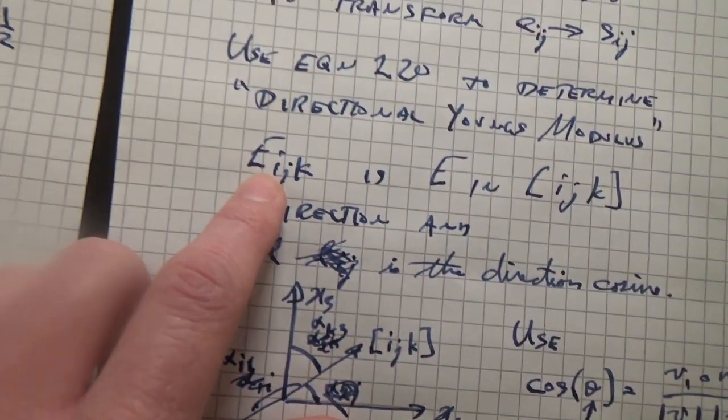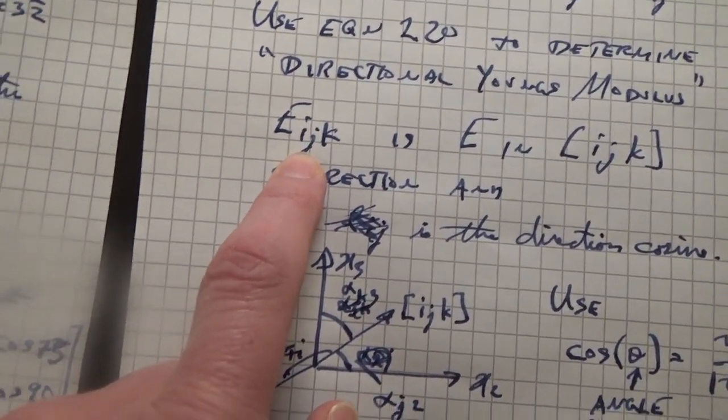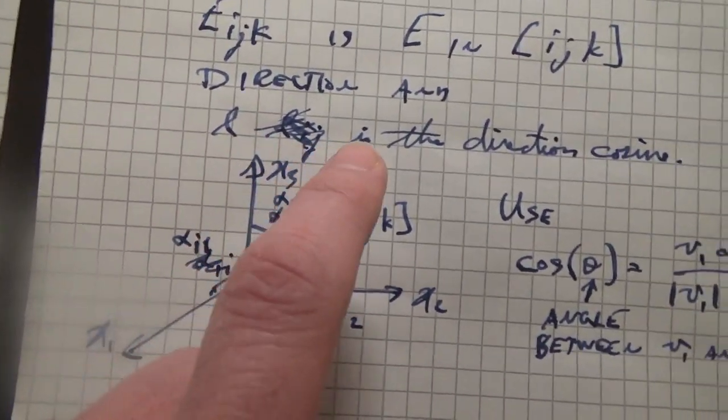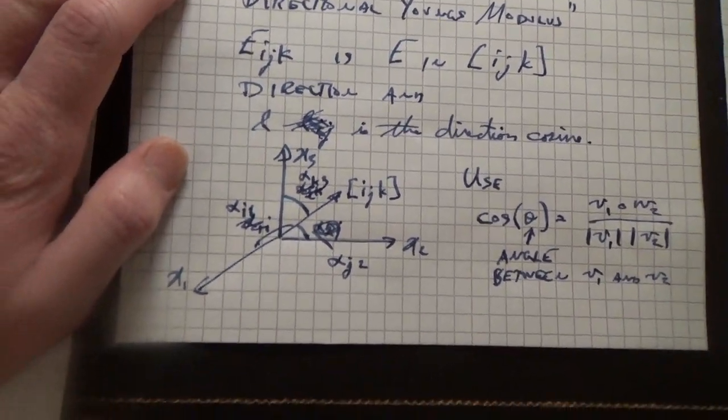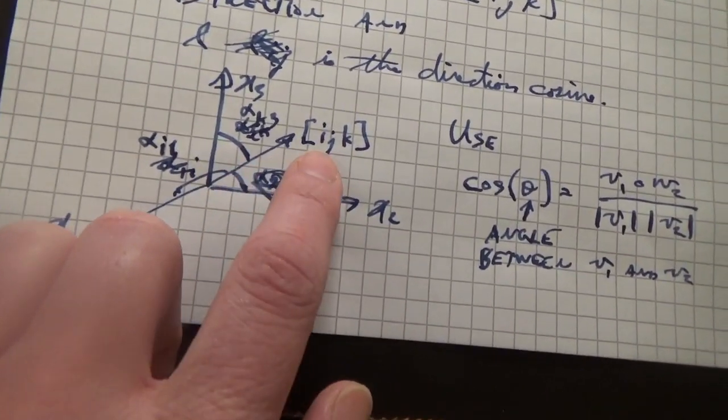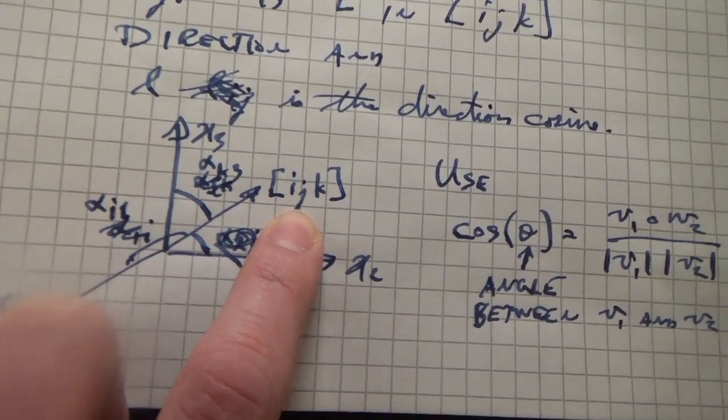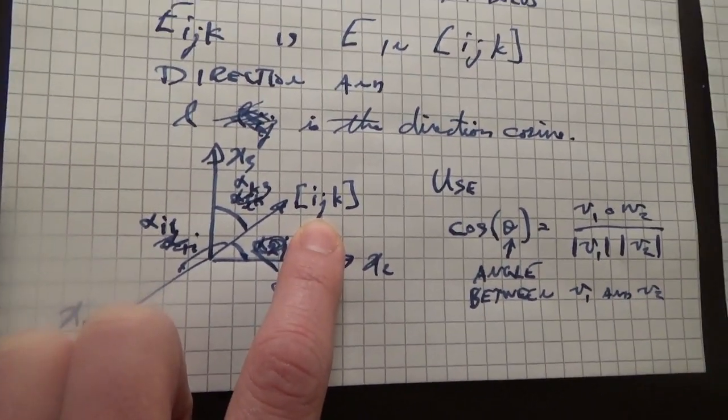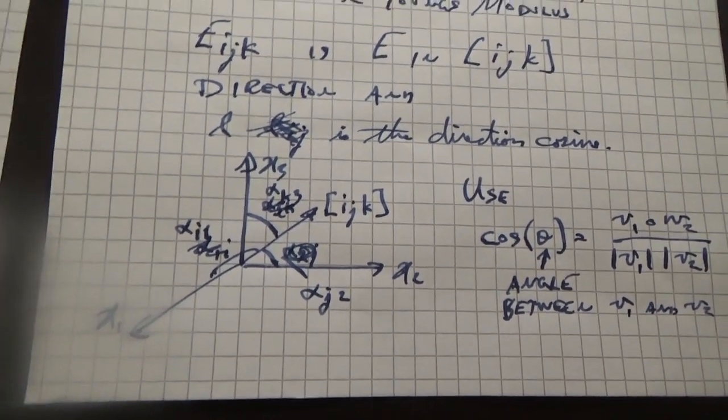Your textbook gives us this e j k equation. In that e j k equation there are these l's, l sub i j, which are the direction cosines. So if you have a vector, in this particular case it is the i j k vector, and we are looking at gold which is cubic, so we do not have to think about any coordinate transformations.